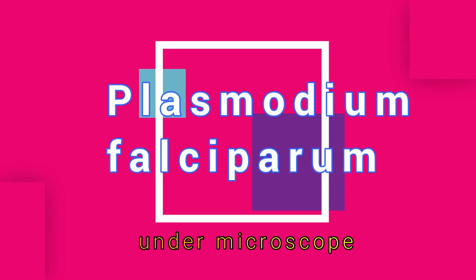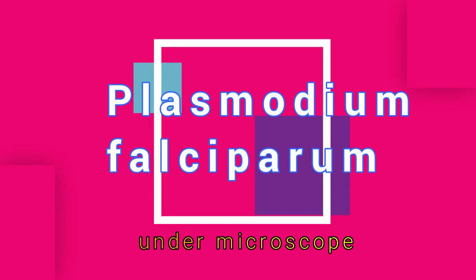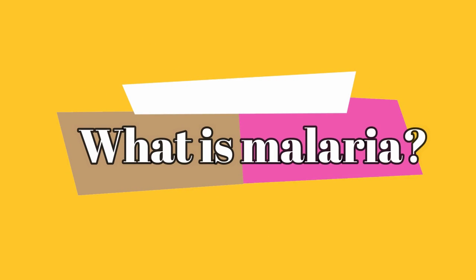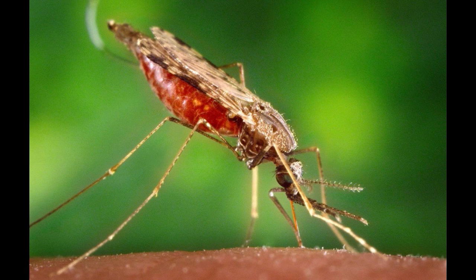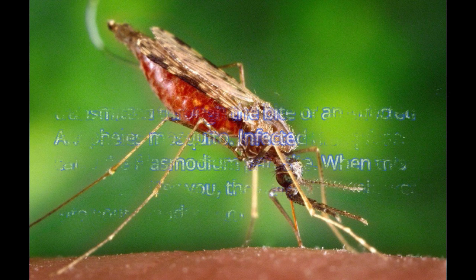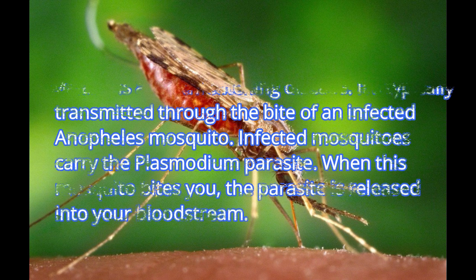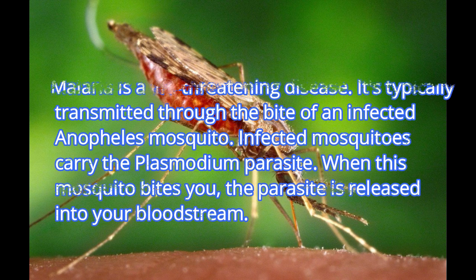Plasmodium falciparum under a microscope. What is malaria? Malaria is a life-threatening disease. It is typically transmitted through the bite of an infected Anopheles mosquito. Infected mosquitoes carry the Plasmodium parasite. When this mosquito bites you, the parasite is released into your bloodstream.